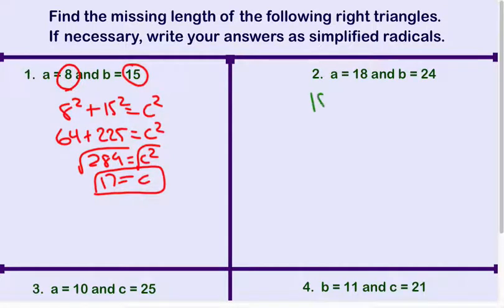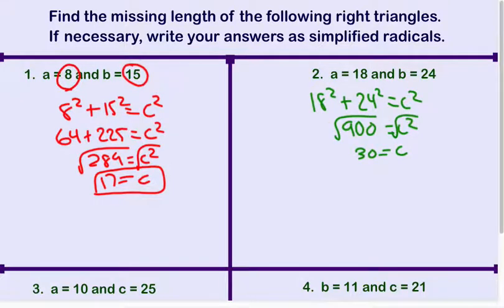Now, 18 and 24, a little bit bigger numbers. Go to your calculators if you need. So 18 squared plus 24 squared is going to be nothing more than 900. So if I square root that guy, that's going to be 30.